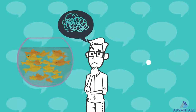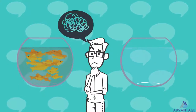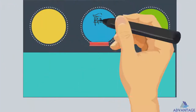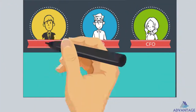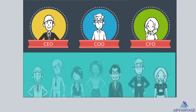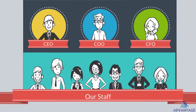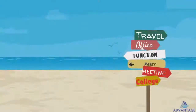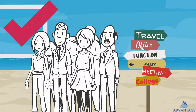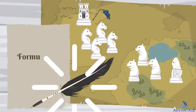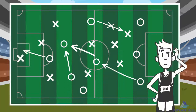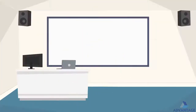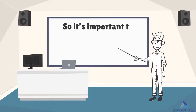Strategy is considered a sophisticated term used only by top executives, who use complicated words to describe it. But in reality, we all play a part — either formulating the strategy or executing it — so it's important to understand what it means.